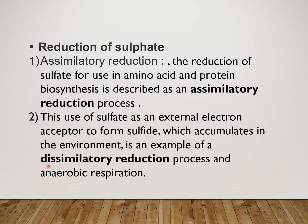The second type is dissimilatory reduction, where Sulphate is used as an external electron acceptor to form Sulphide which accumulates in the environment — this is an example of dissimilatory reduction and anaerobic respiration. Whatever Sulphate is available is used as an electron acceptor; it undergoes reduction and results in production of Hydrogen Sulphide. The end product of dissimilatory reduction is Hydrogen Sulphide, whereas the end product of assimilatory reduction is organic compound, that is protein.